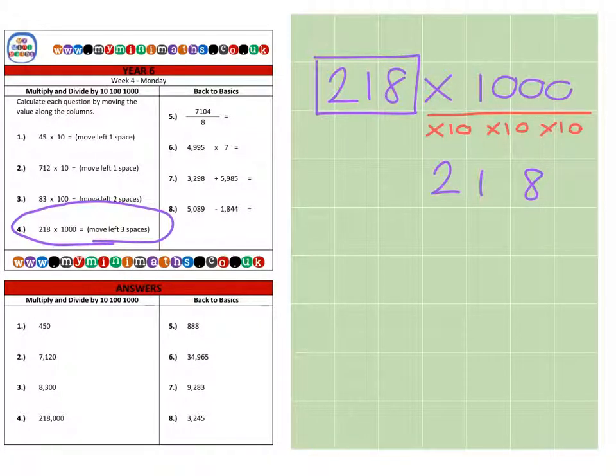And if we take the eight, it doesn't matter which digit we start with, move it one space, two spaces, three spaces. So our eight moves into the thousands column, followed by the one, and then the two.